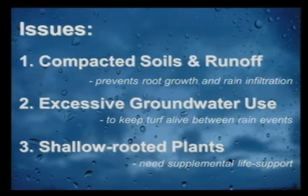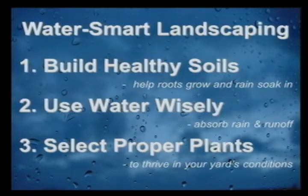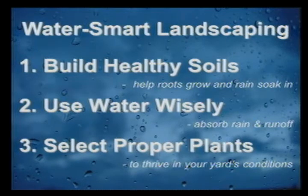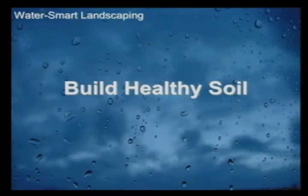Our issues are compacted soils and runoff that prevent root growth and rain infiltration, excessive groundwater usage to keep turf grass alive between rain events, and shallow-rooted plants like Kentucky bluegrass that need supplemental water to survive between rain events. Water smart landscaping addresses three main points: number one, build healthy soils to help roots grow and help rain soak in; number two, use water wisely to absorb rain and runoff; and number three, select the proper plants to thrive in your yard's conditions for a more sustainable landscape.